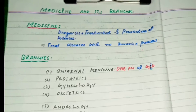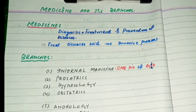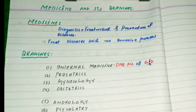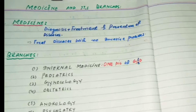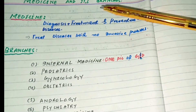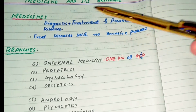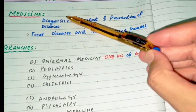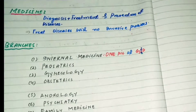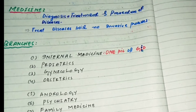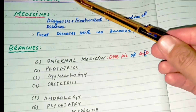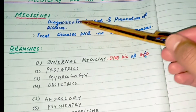Dear students, today I'm going to deliver a series of lectures on medicine. First, I am going to define medicine. Medicine is a branch of science in which we deal with the study of diagnosis, treatment, and prevention of disease. There are three things which we will study in medicine: the first is diagnosis, the second is treatment, and the third is prevention of disease.